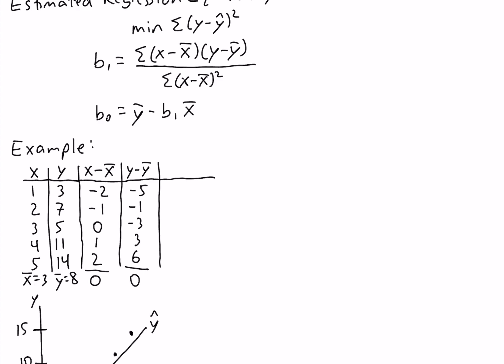Our next column is the product of the previous two columns: (x minus x-bar) times (y minus y-bar). Negative 2 times negative 5 is 10, negative 1 times negative 1 is 1, 0 times negative 3 is 0, 1 times 3 is 3, and 2 times 6 is 12. This column sums to 26.